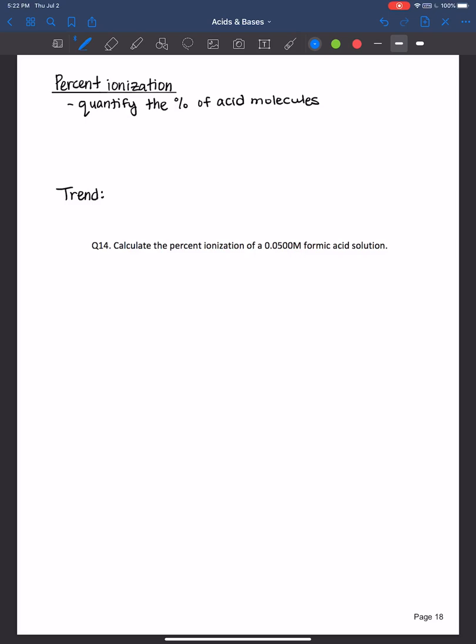Hi everyone, welcome back. In this video we will learn how to quantify the percent ionization of acid molecules. This formula allows us to quantify how many of these molecules actually ionize. Percent ionization is equal to the concentration of the hydronium ions at equilibrium.